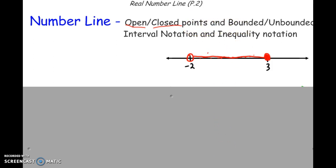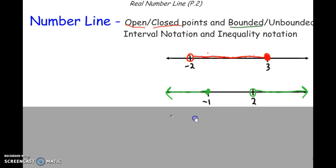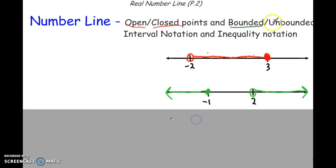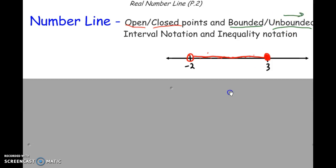There's also the concept of bounded. This is a bounded segment — it has a start and an end, bounded on both sides. If you have something that's unbounded, it's going to look like this: on one side or the other, it's going to have an arrow.